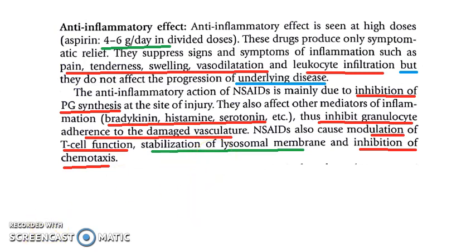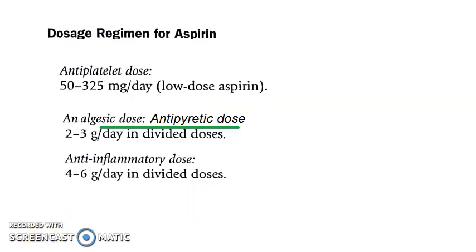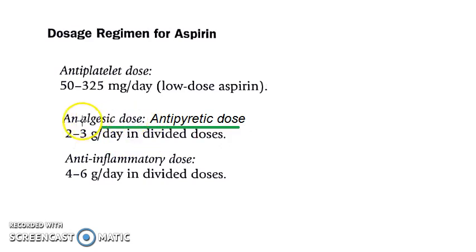To revise: at low dose aspirin causes an antiplatelet effect; at 2 to 3 grams per day in divided doses it causes analgesic and antipyretic effects; at 4 to 6 grams per day it causes anti-inflammatory effect. We will see all the other effects of aspirin in the next video.